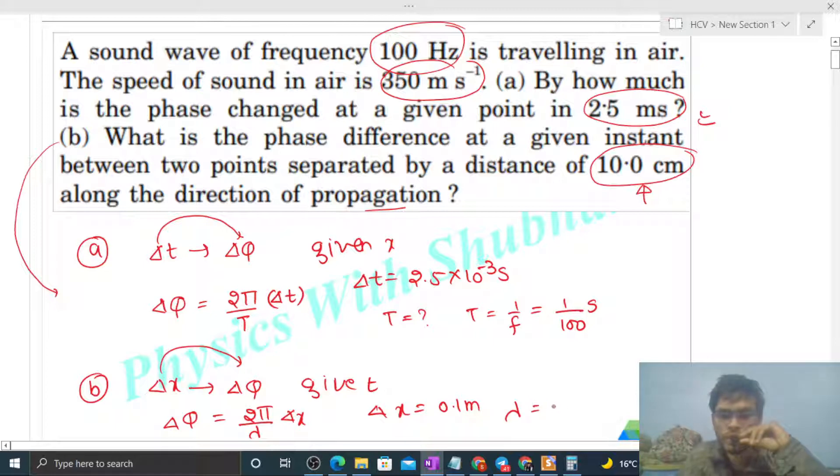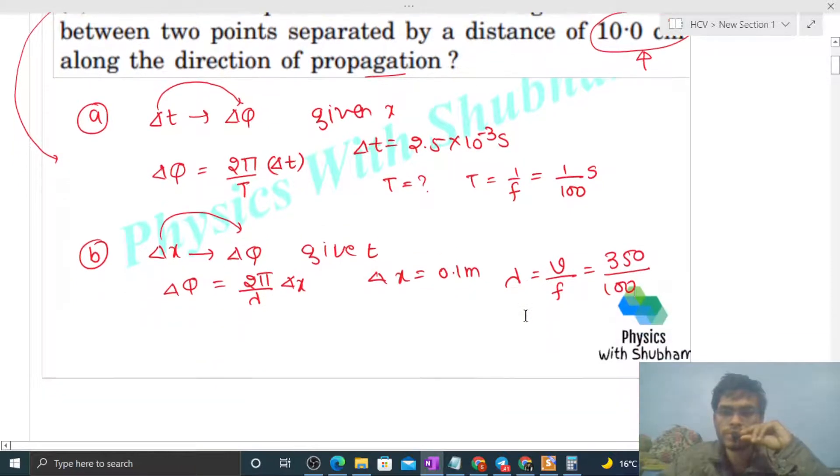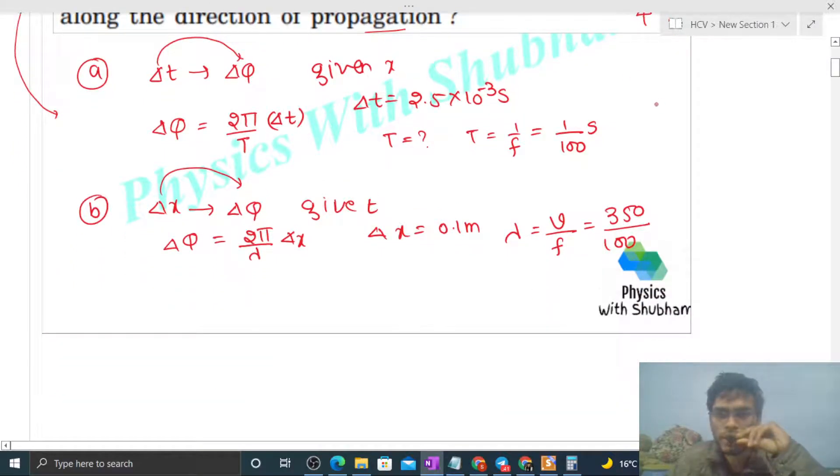Speed and frequency both are given: 350 divided by frequency which is given as 100. So just put the values. You see, in part A, the phase difference will be: